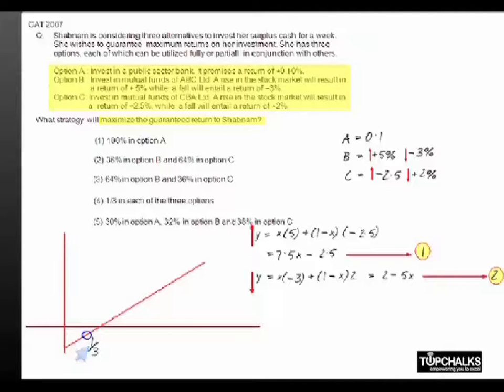Similarly, if you look at the second graph, Y equals 2 minus 5X, if you put X equals 0 it starts at Y equal to 2, and putting Y equals 0 it cuts your X axis at 2 by 5.